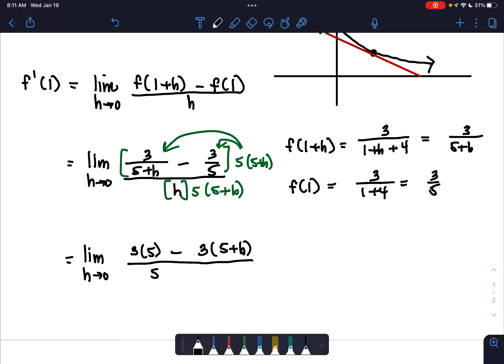Because remember, the goal is to basically get rid of that h that's by itself in the denominator. Not the 5 plus h, but this h right here is the one we're going to try to get rid of. Hopefully, it cancels out naturally.